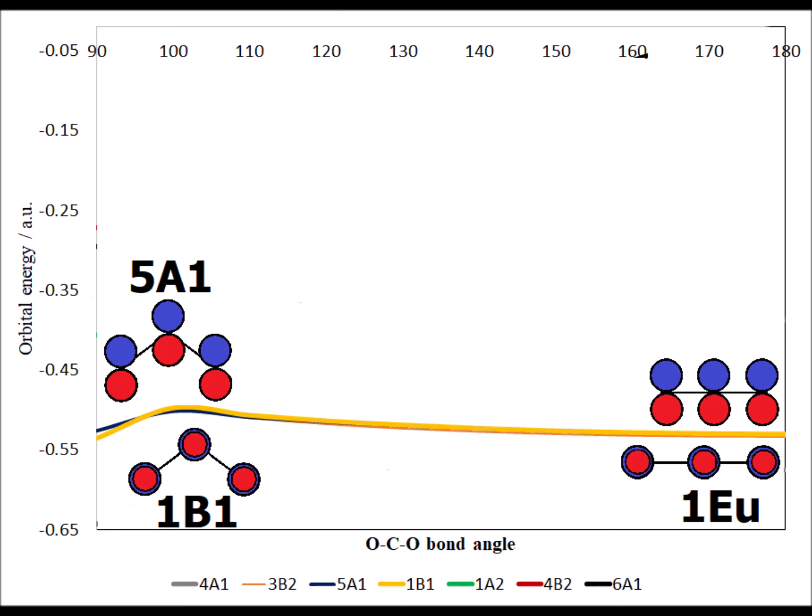When CO2 is linear, the y and z directions are indistinguishable. We can get from one to the other simply by rotating 90 degrees. This is the geometric reason for the degeneracy.